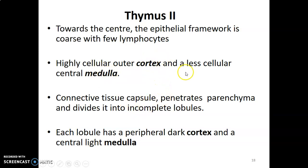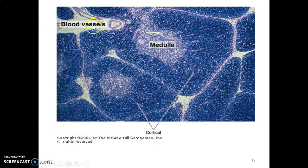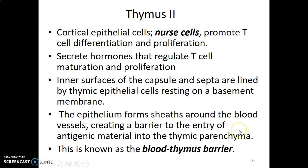The thymus is enclosed within a connective tissue capsule. The capsule sends septa inward to divide the parenchyma into incomplete lobules. Each lobule has an outer dark-staining cortex and a lighter inner medulla. Within the connective tissue you can see neurovascular structures.